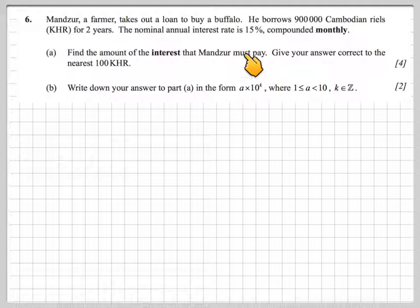The nominal annual interest rate is 15%, compounded monthly. Find the amount of interest that Manzoor must pay, and give your answer correct to the nearest 100 KHR.